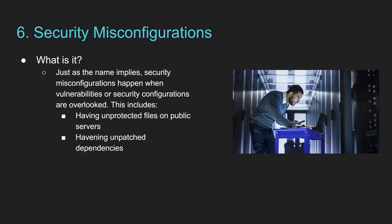Then we have security misconfiguration, which is pretty much as the name says — when you have an application configured in a way that makes it vulnerable, you are in real trouble. For example, that could be unprotected files, or files placed on a server that is actually public when you think they are private. A good way to prevent this is to remove and never install any unnecessary features or dependencies into your server or application, because the fewer features, dependencies, packages, and libraries you have, the easier it is to control and the less likely you are to misconfigure something and make your application vulnerable.